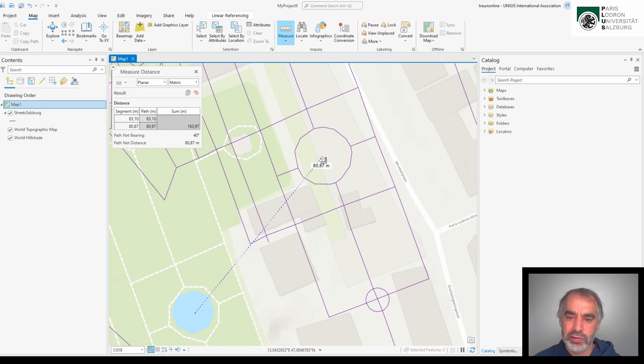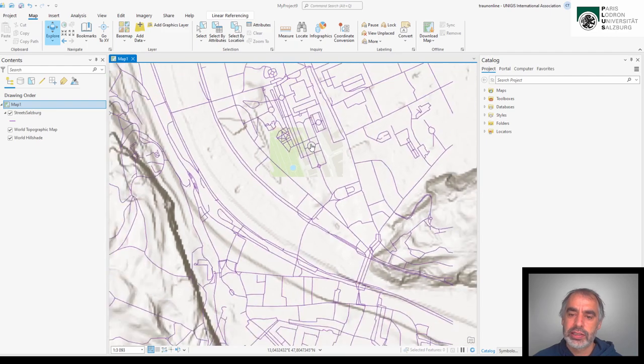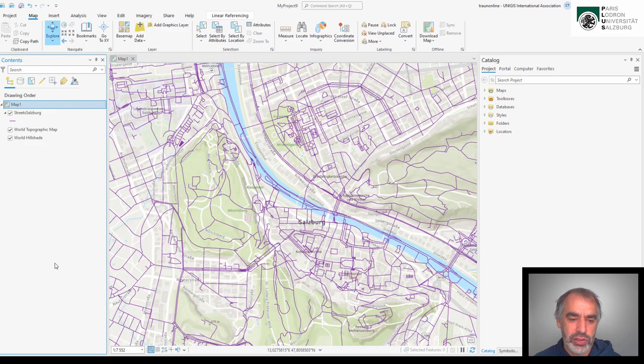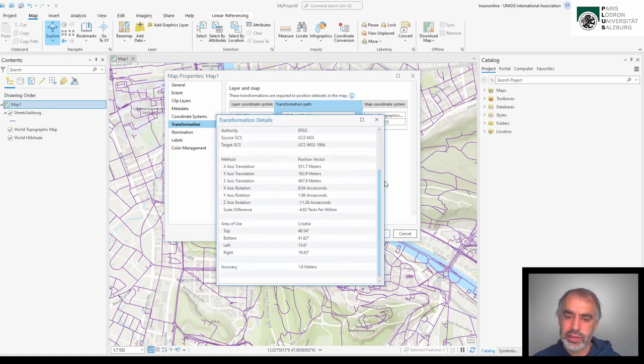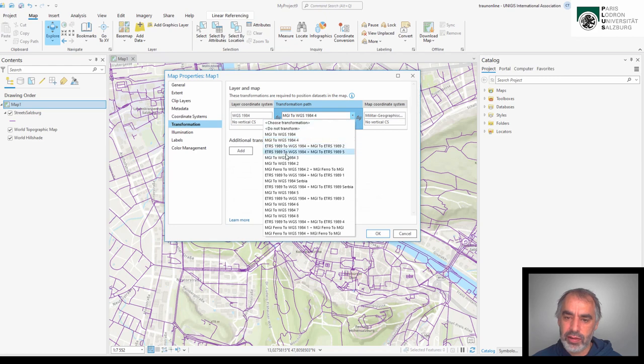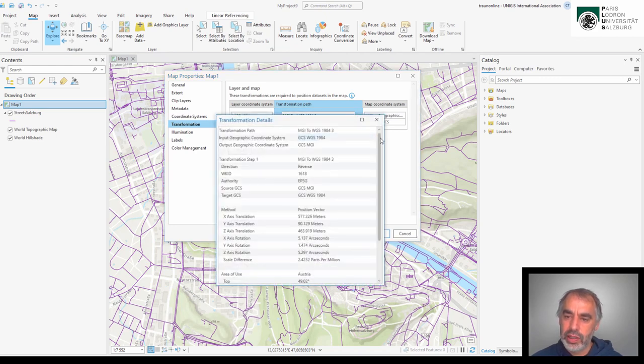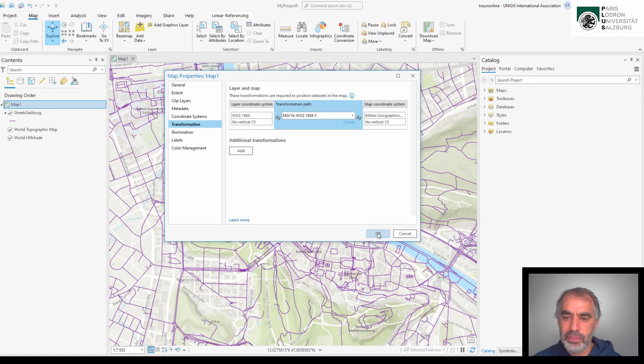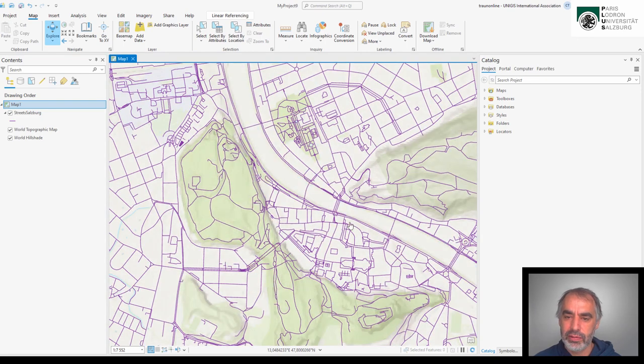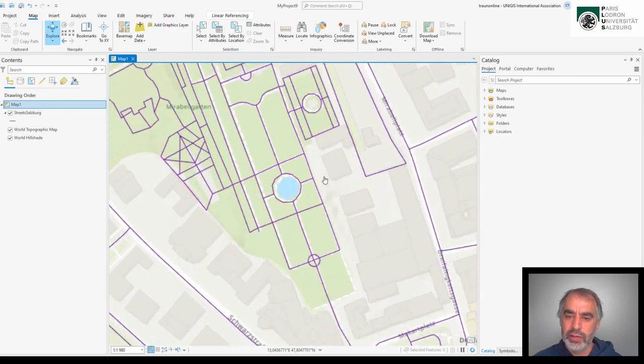That's the offset when using no transformation and that's definitely too much. So we will choose another transformation that fits our need better. Let's check the next one in the list here. And this you see it's for Croatia and although the accuracy is very good, the accuracy is only good for the area of use and we are not in Croatia. So let's try this one. Here we have the area of use Austria, that's fine and the accuracy is 1.5 meters. That's fine too because we only need it as a background information for our data and I apply it and you see it fits quite well.